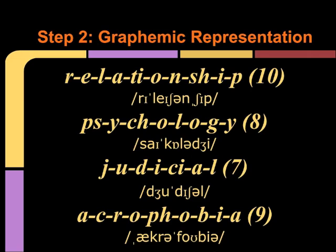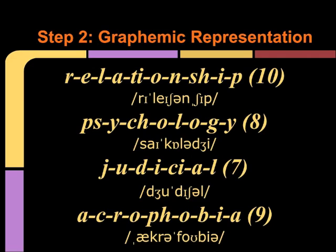In 'relationship,' the T-I represents the SH sound, and the S-H also represents the SH sound. In 'psychology,' we recognize that the P is silent and that the C-H represents the K sound. In 'judicial,' the C-I would represent the SH sound. And in 'acrophobia,' the P-H represents the F sound. So again, we notice that the number of letters is much closer to the number of sounds, mainly because Latin and Greek had a stronger connection between sound and spelling.